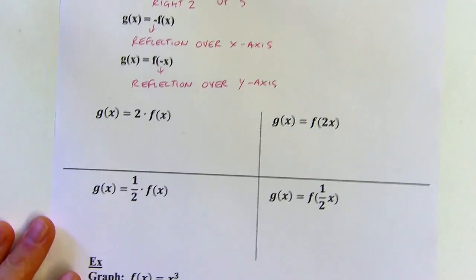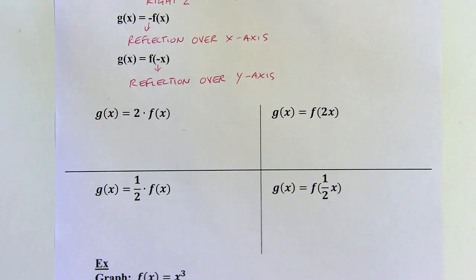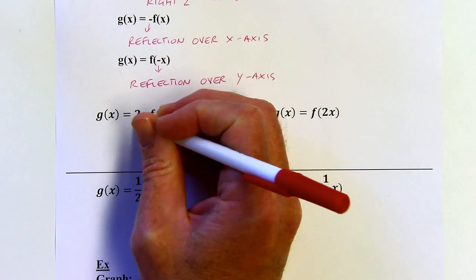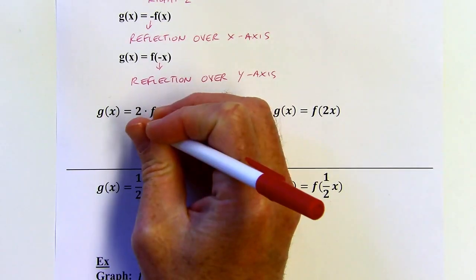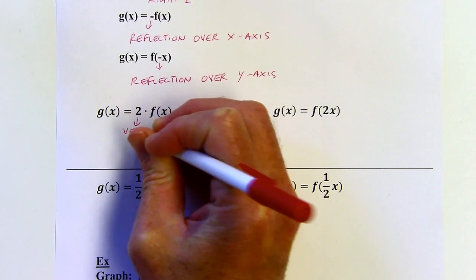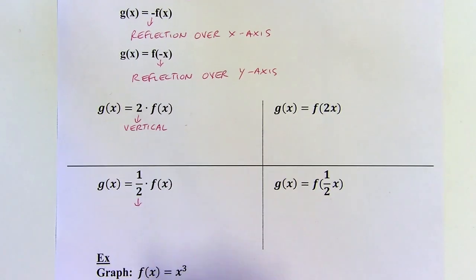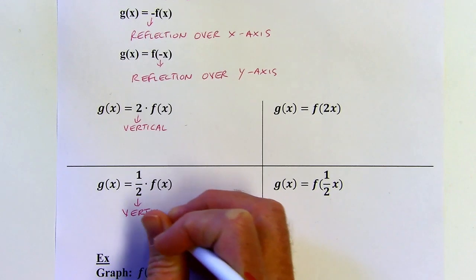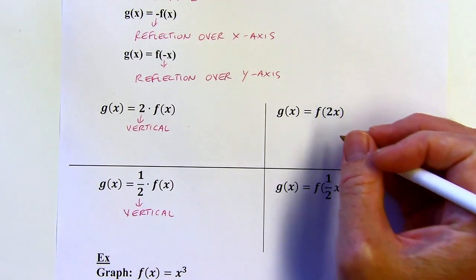This is the same as what we did in quadratic equations — I believe that was in chapter two, and I have a video about that too. So when the number is outside, there's going to be some sort of a vertical change. Both of these will be a vertical change of some sort. When the number is inside, that means you're going to have a horizontal change.